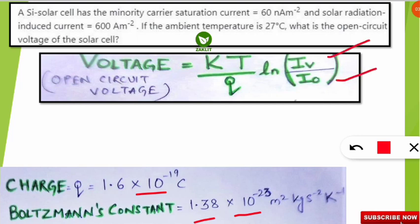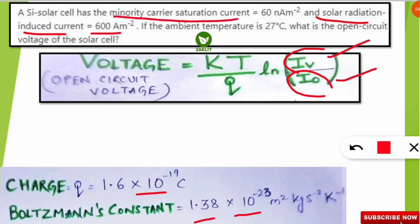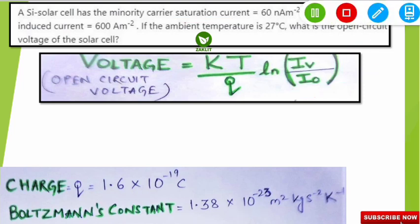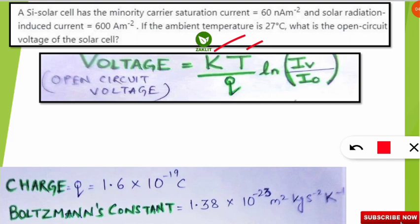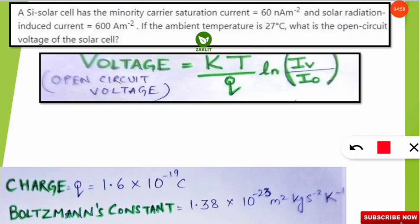I_v and I₀ are already given in the question. I_v is the solar radiation induced current, given as 600 ampere per meter square. I₀ is the minority carrier saturation current, given as 60 nano ampere per meter square, which you convert by multiplying by 10 to the power minus 9 to get ampere per meter square. K is Boltzmann's constant, T is temperature in Kelvin, q is charge, and ln(I_v / I₀) — don't be confused by the natural log; we will solve it easily.